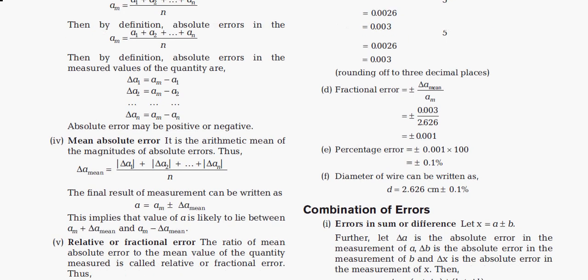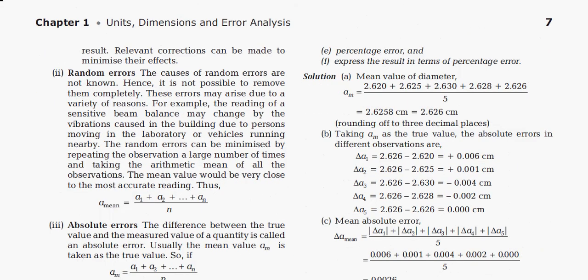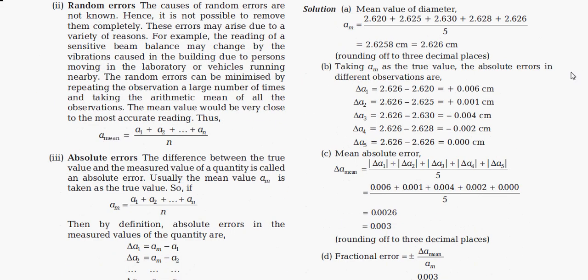The second type is random error. The causes of random error are not known, so it is not possible to remove them completely. This error may arise due to a variety of reasons — for example, readings of a sensitive beam balance may change due to vibrations caused by people moving in the laboratory or vehicles running nearby. Random error can be minimized by repeating the observation a large number of times and taking the arithmetic mean of all observations. The mean value would be very close to the most accurate reading.